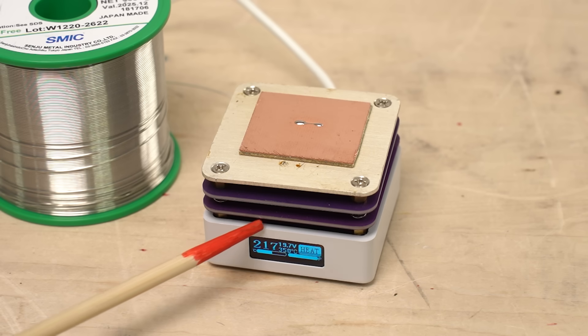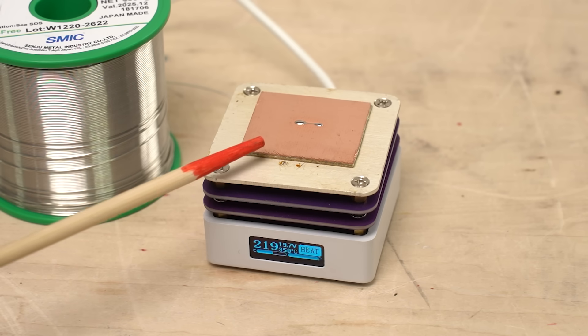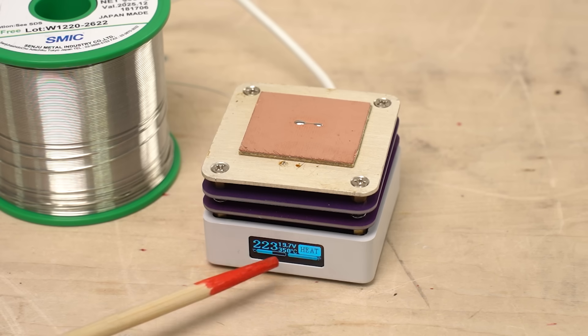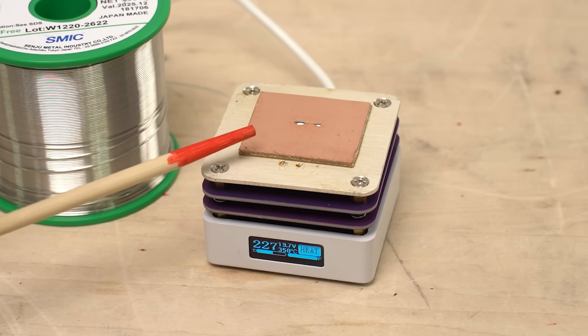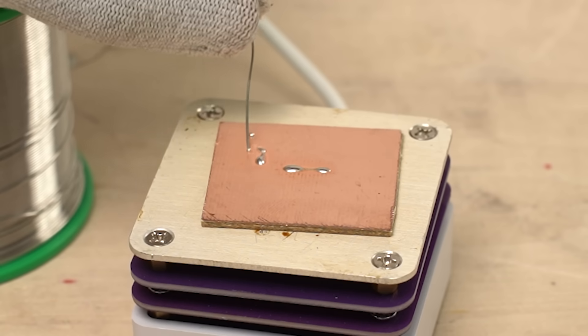However, once the displayed temperature exceeds 200 degrees Celsius, the temperature starts to rise very slowly. So even if you set the temperature to 350 degrees Celsius, it's not likely that the actual temperature reaches 350 degrees Celsius. The solder is melted completely.